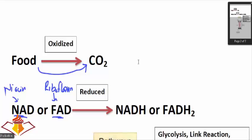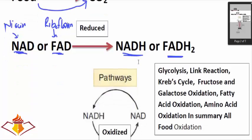NAD and FAD are reduced to NADH and FADH₂. In all pathways — glycolysis, link reaction, Krebs cycle, fructose and galactose oxidation, fatty acid oxidation, amino acid oxidation — in summary, all food oxidation produces NADH.